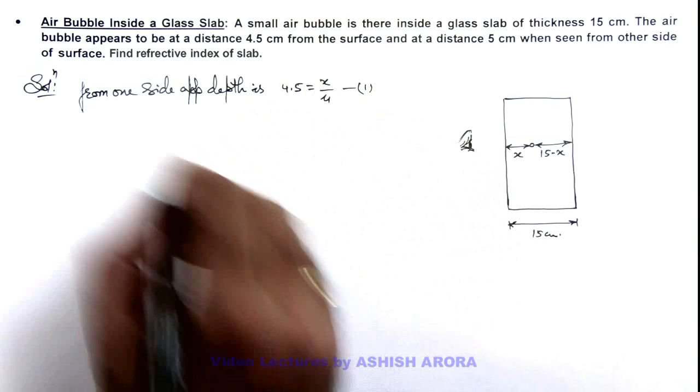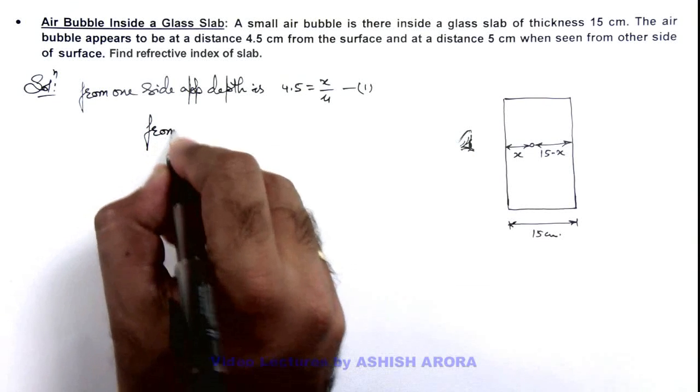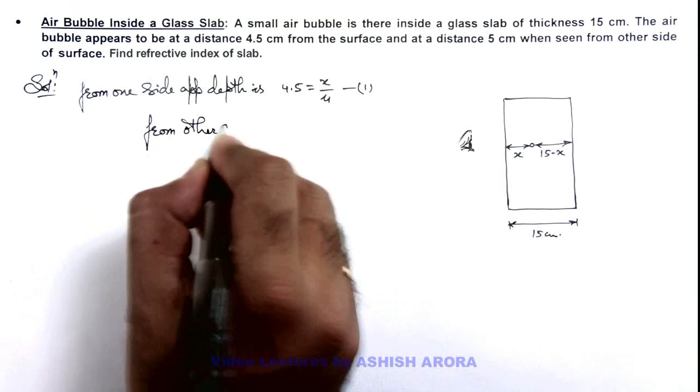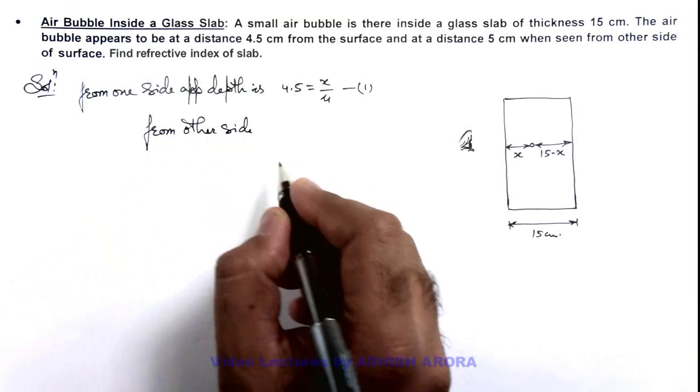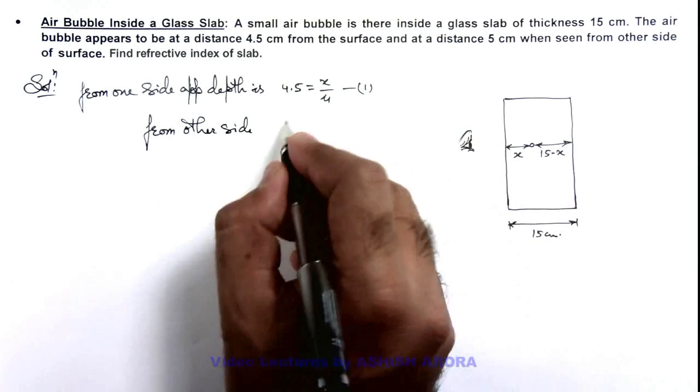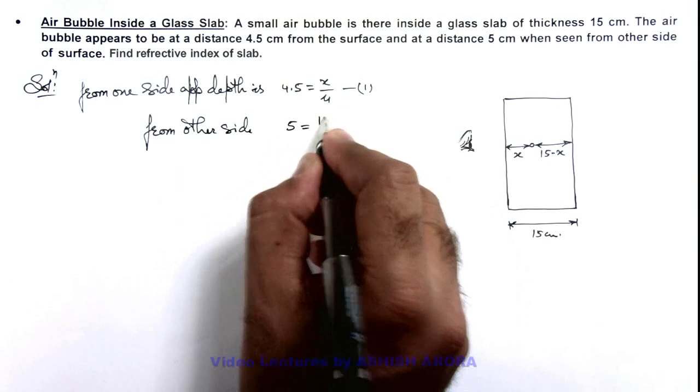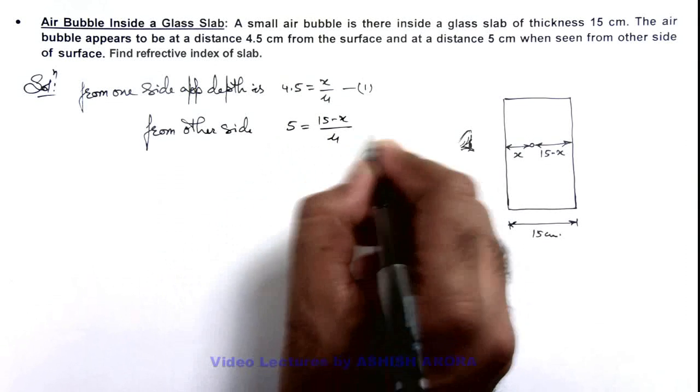If we calculate from other side, it is appearing at a depth of 5 centimeter, so 5 can be written as 15 minus x by μ. This is our equation 2.